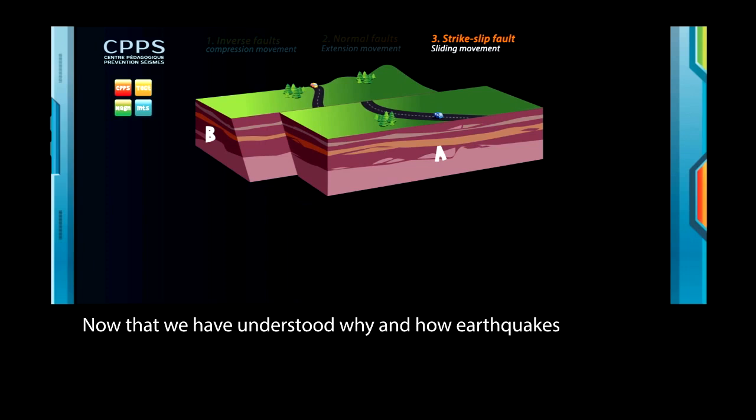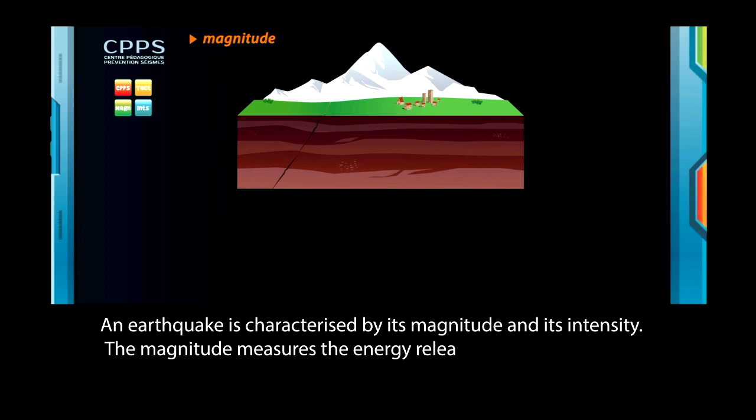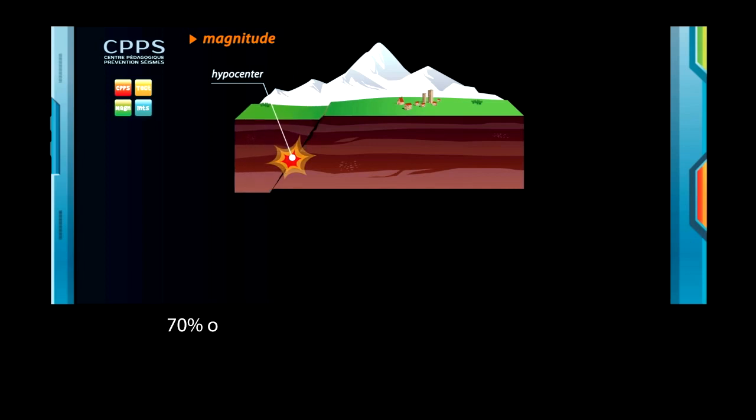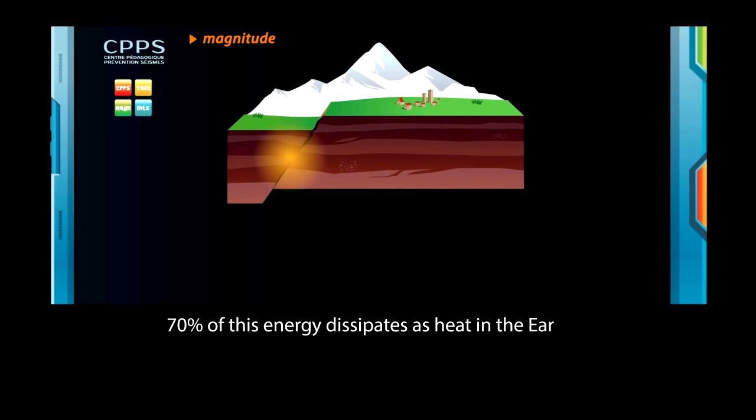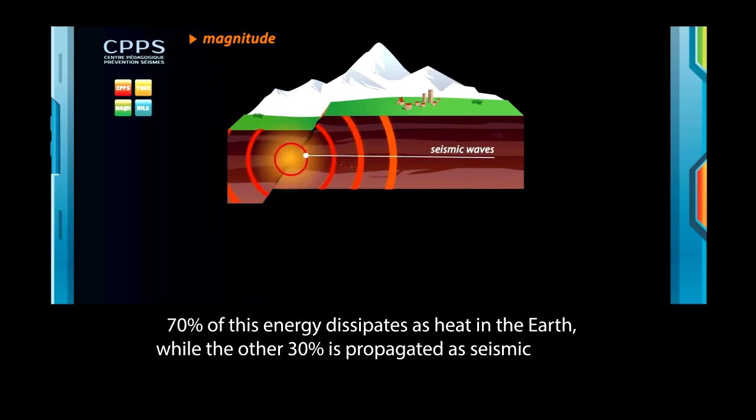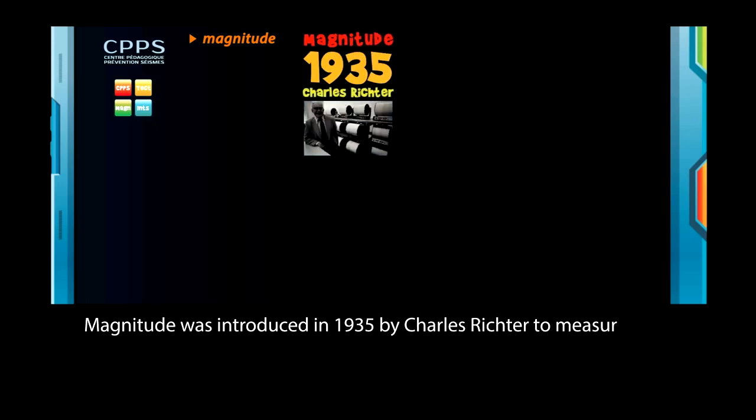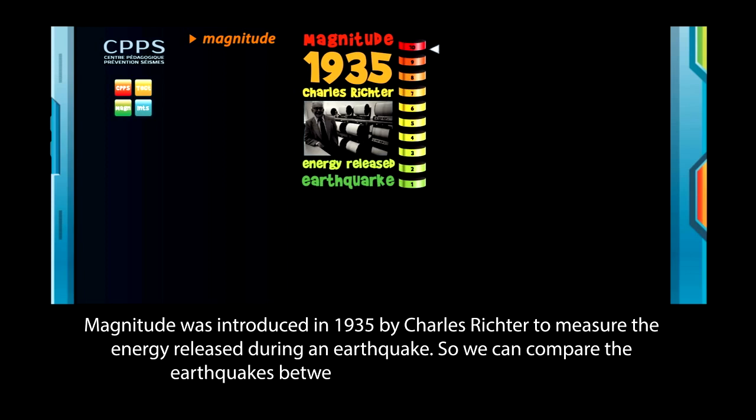Now that we have understood why and how earthquakes appear, the question is how to measure the importance of an earthquake. An earthquake is characterised by its magnitude and its intensity. The magnitude measures the energy released at the hypercentre of the earthquake when the fault suddenly breaks. Seventy percent of this energy dissipates as heat in the Earth, while the other thirty percent is propagated as seismic waves throughout the globe.